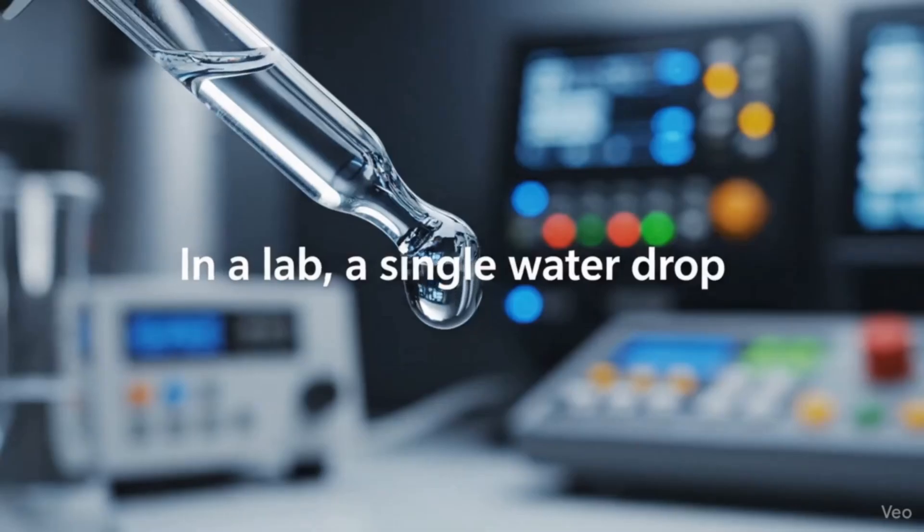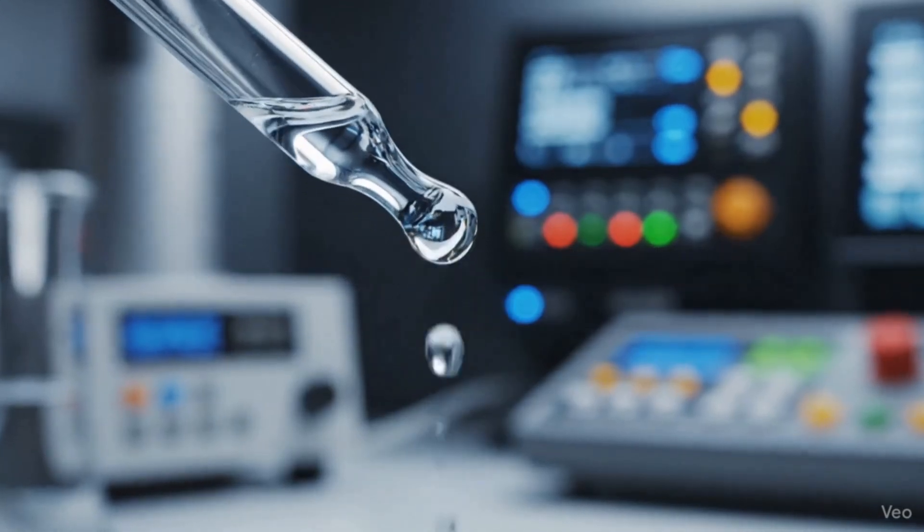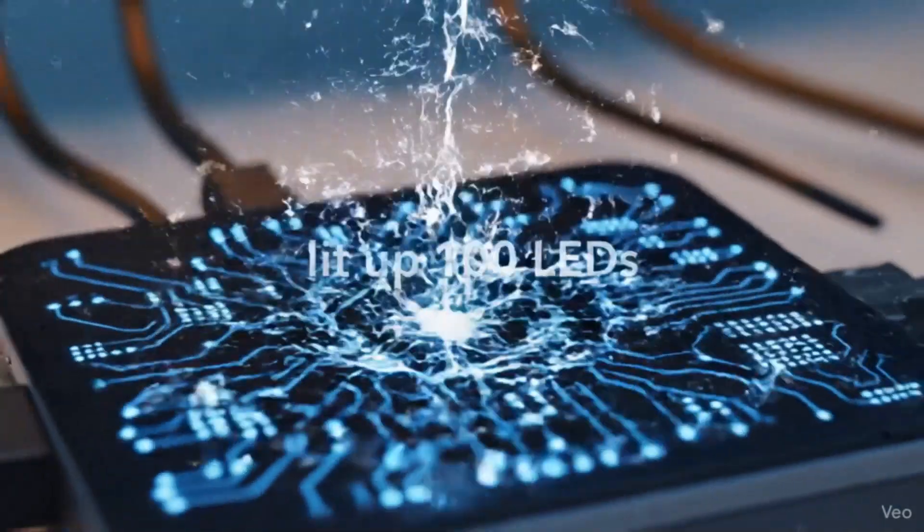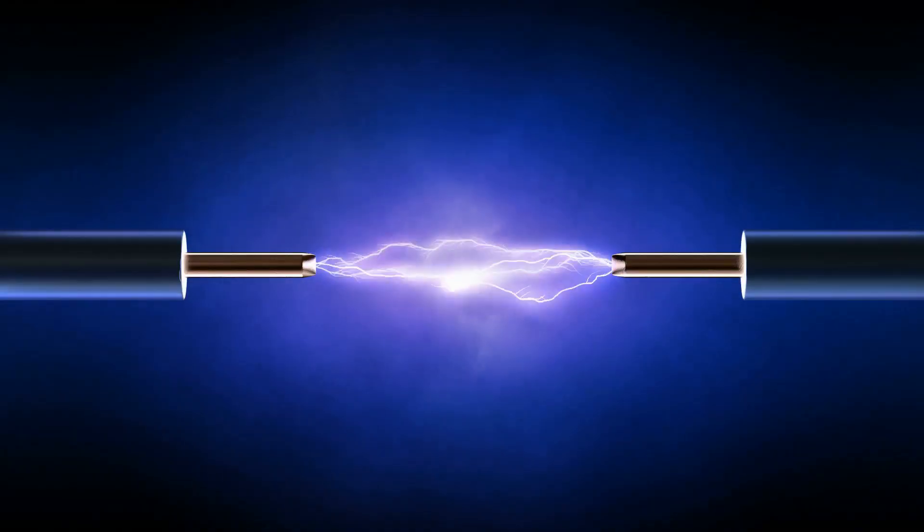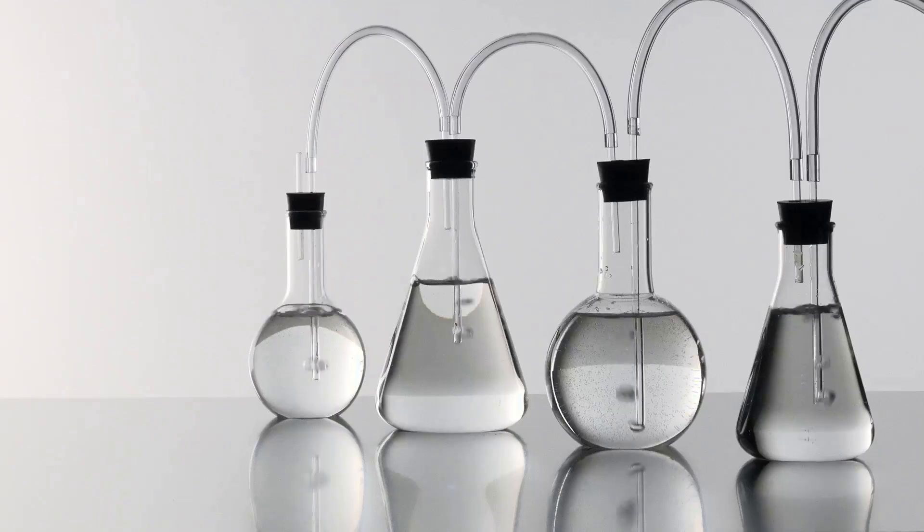The results were astonishing. This new method is nearly 100,000 times more powerful than old continuous flow systems and converts over 10% of the water's gravitational potential energy directly into electricity. A small setup of just 4 tubes powered 12 LEDs continuously for 20 seconds.